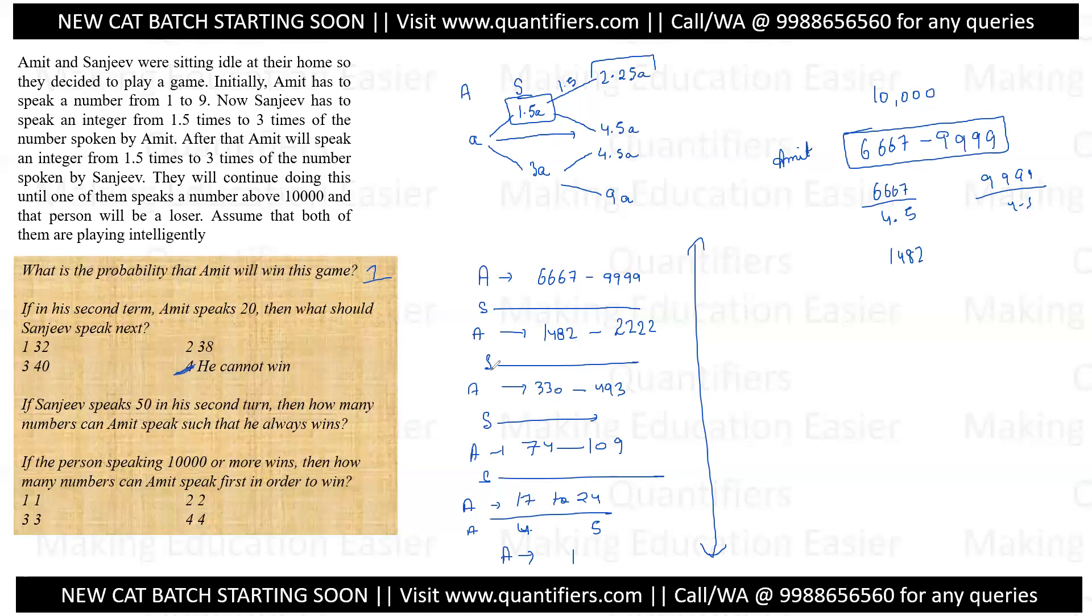If Sanjeev speaks a number 50, then how many numbers can Amit speak such that he always wins? See, if Sanjeev has spoken 50, Amit has liberty of choosing the number from 1.5 to 3 times, which means 75 to 150. But what is the winning zone for Amit? Since Amit is playing intelligently, winning zone for Amit will be 75 to 109, versus 74 to 109. But because 75 is the minimum we can pick, so from 75 to 109. That's 35 numbers.